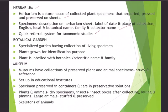Herbarium sheets include description, label of date, place of collection, English name, local name, botanical name, family, and collector's name. It serves as a quick referral system for taxonomic studies. Botanical gardens are specialized gardens with collections of living plant specimens grown for identification purposes. Each plant is labeled with its botanical or scientific name and family.